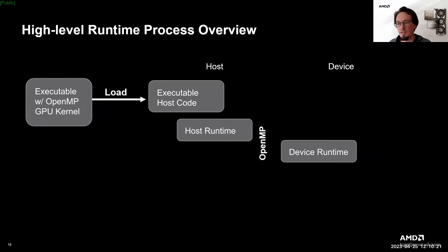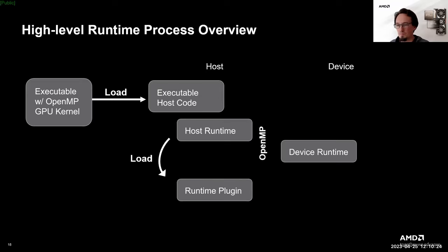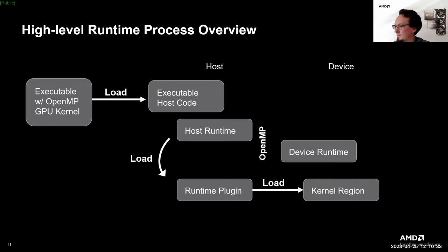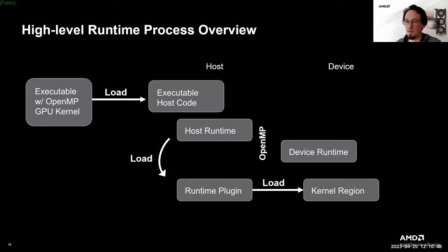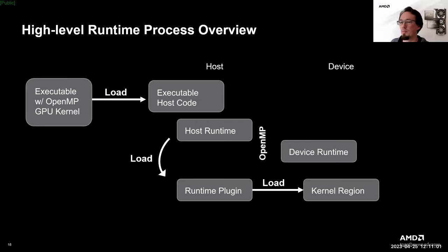When the application hits a target region, libomptarget dispatches the so-called kernel launch to the plugin. The plugin then uses the function name to open the device image that was embedded into the executable, look up the pointer to the code, and load it. It then initializes a kernel launch of that pointer using the particular launch configuration to obey any user-specified number of threads and similar requests made through the OpenMP API. Finally, the kernel executes on the device and the plugin de-initializes if required after the kernel finishes.